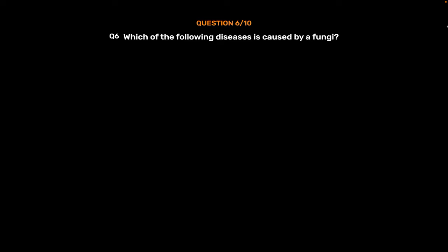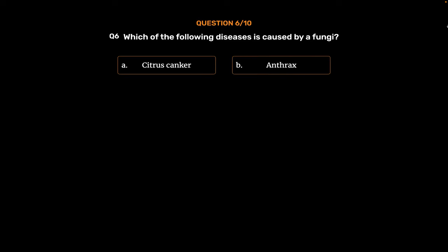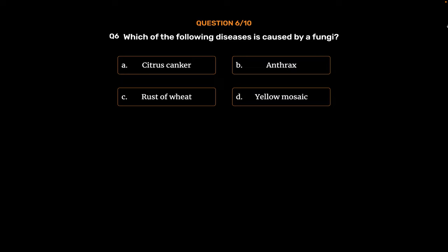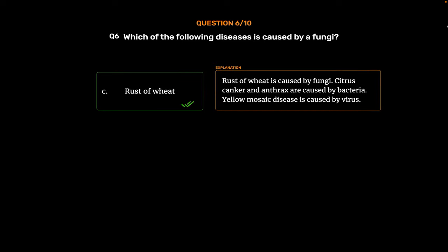Question No. 6: Which of the following diseases is caused by fungi? Option A: Citrus canker. Option B: Anthrax. Option C: Rust of wheat. Option D: Yellow mosaic. The correct answer is Option C, Rust of wheat. Rust of wheat is caused by fungi. Citrus canker and anthrax are caused by bacteria. Yellow mosaic disease is caused by a virus.